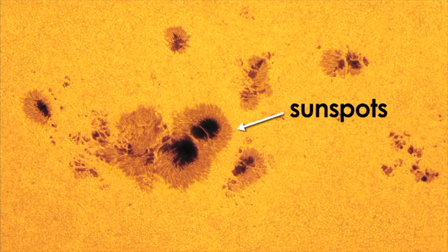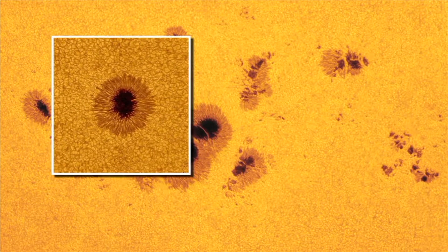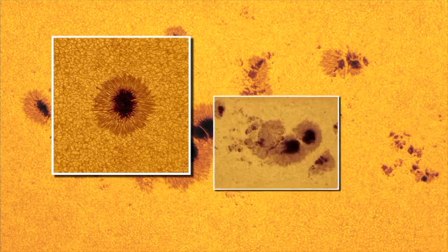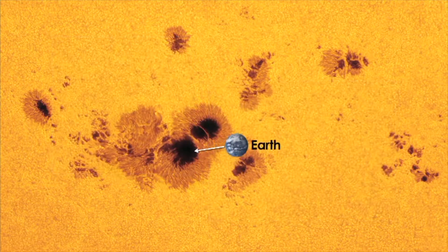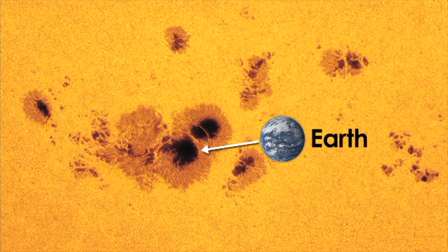Sunspots are cooler than the rest of the sun. They have a slightly darker color than the rest of the sun and have a strong gravitational force. The average size of a sunspot is as large as our Earth. Sunspots appear and disappear about every 10.8 years, and scientists use them to study the behavior and changes of the sun.